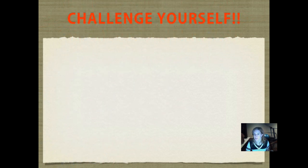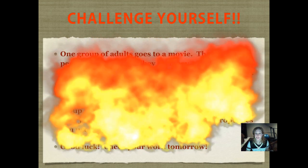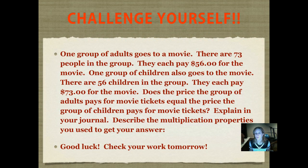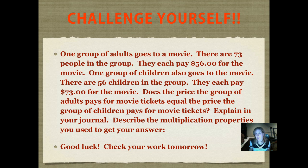I think you're ready for a challenge now. One group of adults goes to a movie — there are 73 people in the group and they each pay $56 for the movie. One group of children also goes to the movie — there are 56 children in the group and they each pay $73 for the movie. Does the price the group of adults pays for movie tickets equal the price the group of children pays for movie tickets? In your journal, solve that and explain how you got your answer. Describe the multiplication properties you used to get your answer.